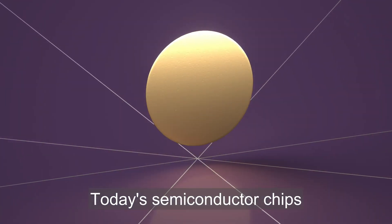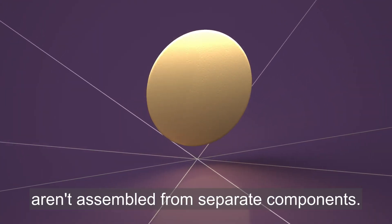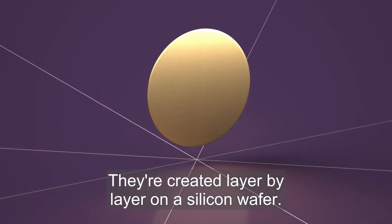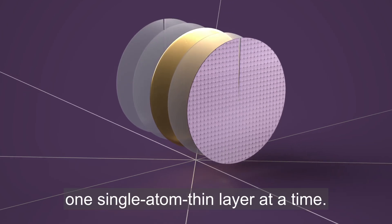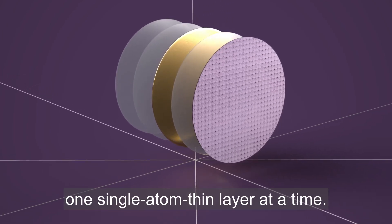Today's semiconductor chips aren't assembled from separate components. They're created layer by layer on a silicon wafer. With ALD, we can deposit one single atom thin layer at a time.